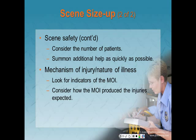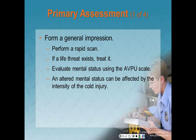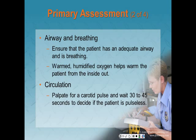Use appropriate standard precautions and consider the number of patients. Summon additional help as quickly as possible and reevaluate your mechanism of injury or nature of illness. For primary assessment, form your general impression and perform a rapid scan to determine whether a life threat exists and treat it. If the chief complaint is simply being cold, quickly assess how cold the patient actually is by feeling the skin on the abdomen. Evaluate mental status using the AVPU scale — an altered mental status can be affected by the intensity of the cold injury.